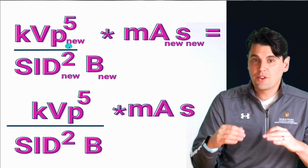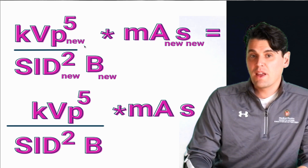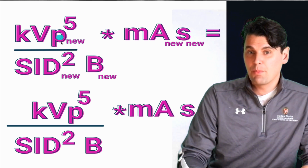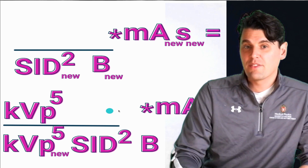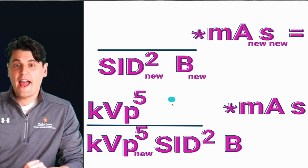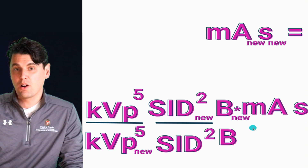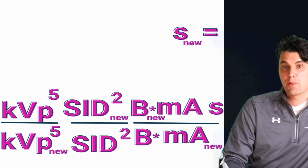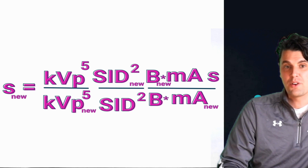Don't be intimidated — all we've done is write the intensity equation twice: one side is our original parameters, the other is our new parameters. Going through each variable, to cancel it out or move it from one side to the other, we multiply both sides accordingly. KVP to the fifth power on one side becomes KVP over KVP-new to the fifth power. SID moves from the denominator on one side to the numerator on the other. Likewise, Bucky-new moves to the numerator. Finally, MA moves to the denominator for MA-new. We end up with our new time, S-new.